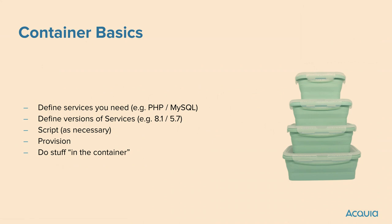The basics of a container are that you tell it what you need in terms of services. In the Drupal world, that's typically at minimum PHP and MySQL or a MySQL-like database. You might also need Node, NPM, or some other stuff depending on your project, but at minimum it's going to be a database and PHP. You need to define the versions — so you might be running PHP 8.1, MySQL 5.7. You may need to script some stuff, and then you spin up those containers and work in them. I'm intentionally making this sound easy, because it actually is that easy.